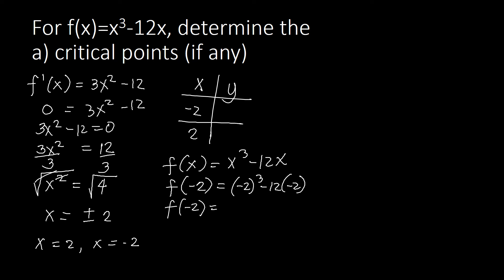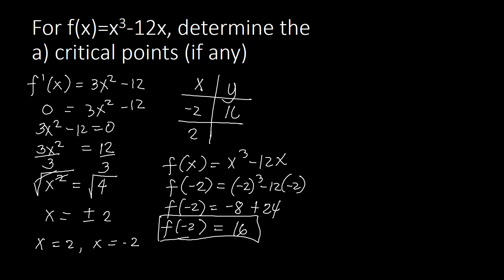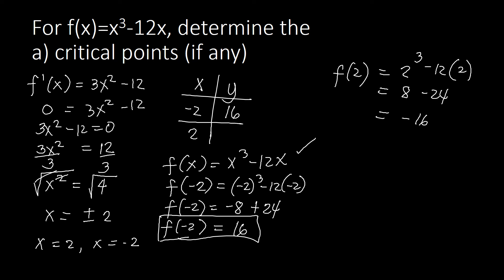f(-2) = (-2)³ minus 12 times (-2). Now (-2)³ = -2 × -2 × -2 = -8, and -12 × -2 = +24. So f(-2) = -8 + 24 = 16. Next, f(2) = 2³ - 12(2) = 8 - 24 = -16. So when x = -2, y = 16, and when x = 2, y = -16.